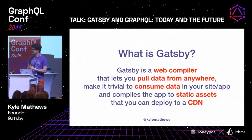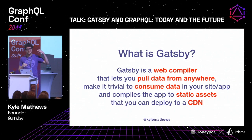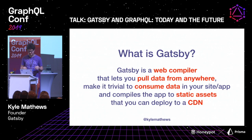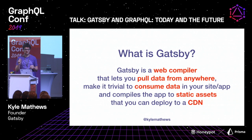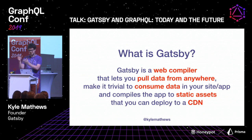What is Gatsby? Gatsby is what we call a web compiler. It takes data pulled in through GraphQL, takes React components, and then compiles the most optimized website possible. Through GraphQL and our plugin ecosystem, you can pull in data from anywhere — basically anything that Node.js can reach. It makes it trivial to consume data from all different sources in your site and app, then compiles it to static assets which you can deploy on a CDN so your site loads super fast without a lot of operations headache.